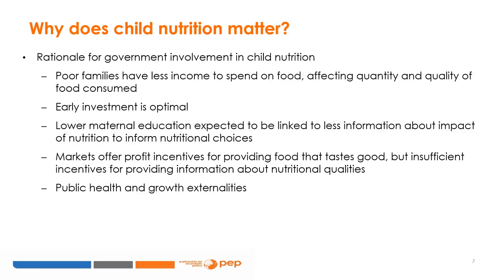There are many market failures in nutritional choices that would provide a rationale for government involvement in child nutrition. These reasons include the inequity that means many poor households cannot afford to buy a healthy, balanced, and sufficient basket of food. Due to informational asymmetries, markets are not rewarded for providing healthy food, but rather for providing food that tastes good. Lastly, there are benefits to public interventions, especially early interventions, because of the health and productivity externalities of nutrition in the early years.